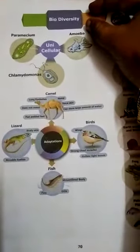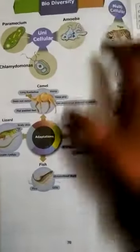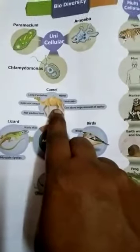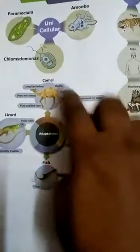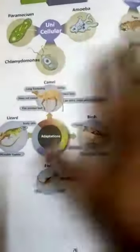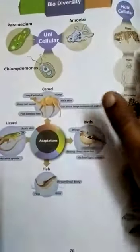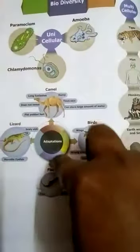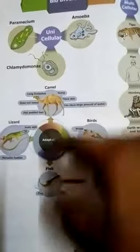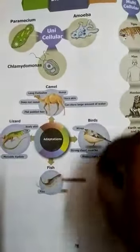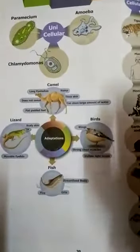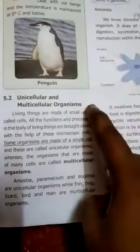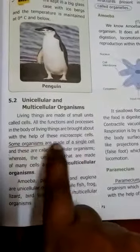Based on habitat, animals have various adaptations. For example, we are not able to live in a desert, but animals living there have peculiar characters. Adaptation means changes in animals based on their living place. We will see this from this lesson onwards, along with unicellular and multicellular organisms.